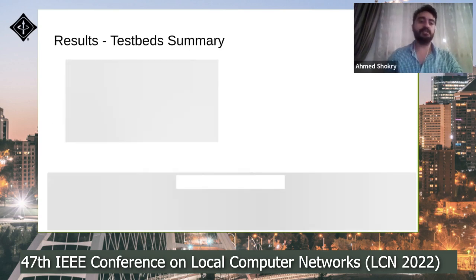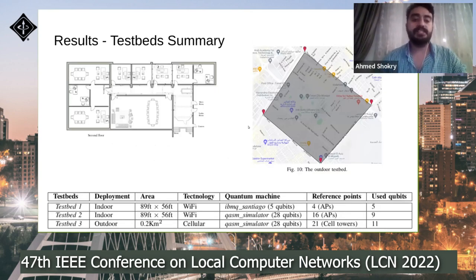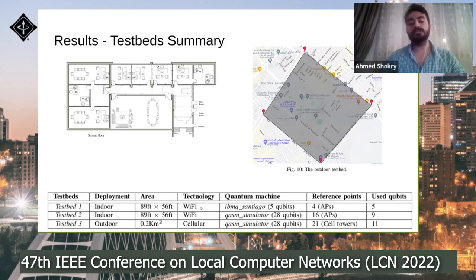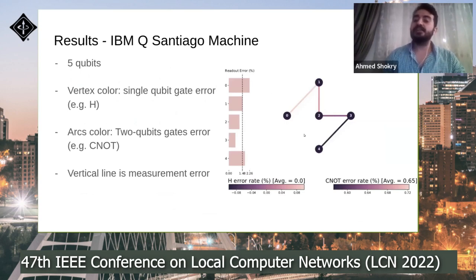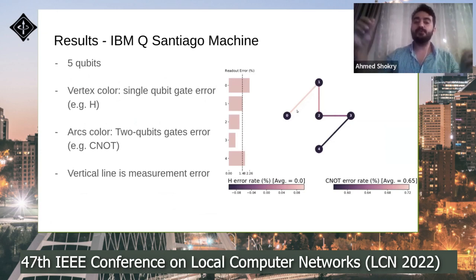Our test beds cover different scenarios — indoor and outdoor — using different technologies: Wi-Fi and cellular signal. We deploy our quantum algorithm on a real IBM Quantum Santiago machine with five qubits. This figure shows the topology of different qubits on the IBM Quantum Santiago machine, where vertex color represents single-qubit gate error like the Hadamard gate, arc color represents two-qubit gates such as the CNOT gate, and vertical lines represent measurements.